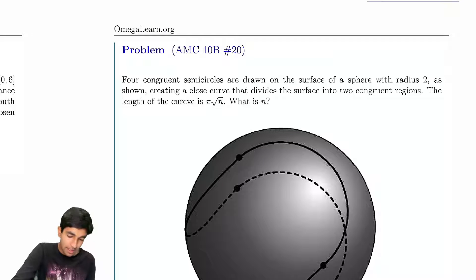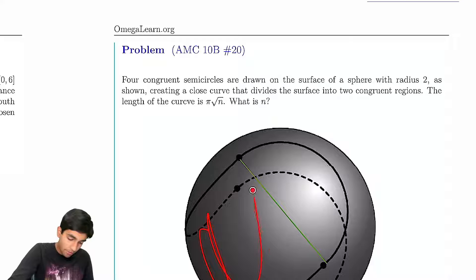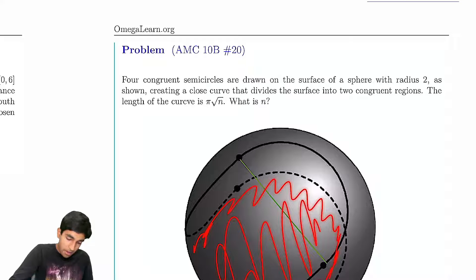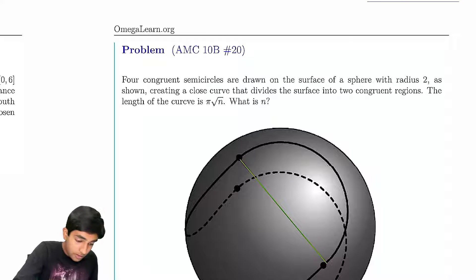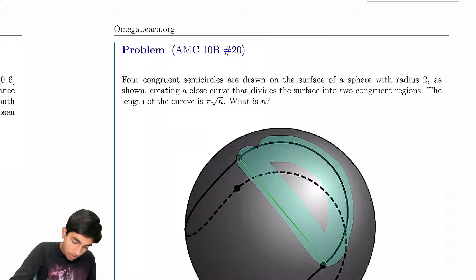We somehow have to use this condition: a surface into two congruent regions. So let's take a look at this part first. Let's take a look at this surface, like all this stuff on the front side, and then all this region on the back.